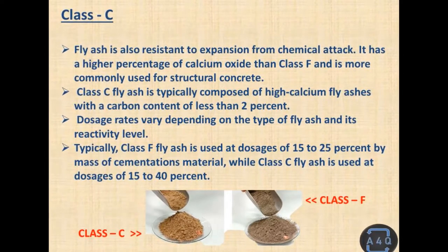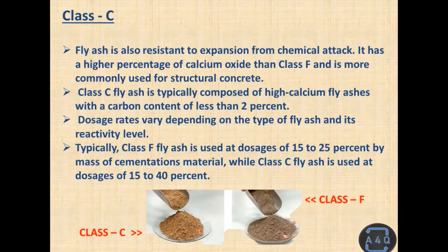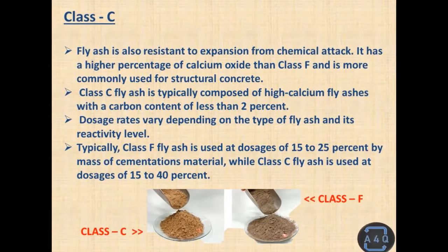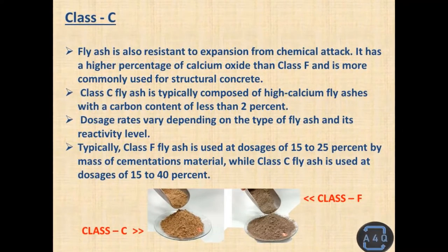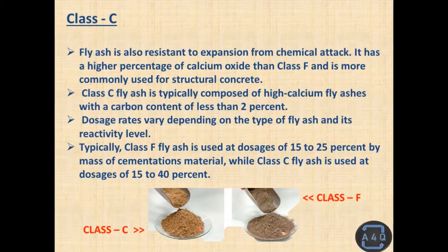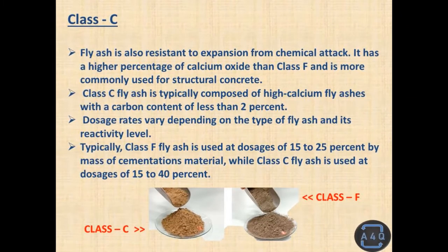Dosage rates vary depending on the type of fly ash and its reactivity level. Typically, Class F fly ash is used at dosages of 15 to 25 percent by mass of cementitious material, while Class C fly ash is used at dosages of 15 to 40 percent.